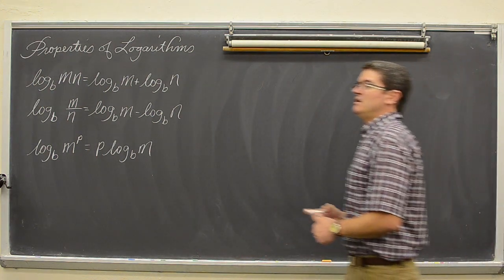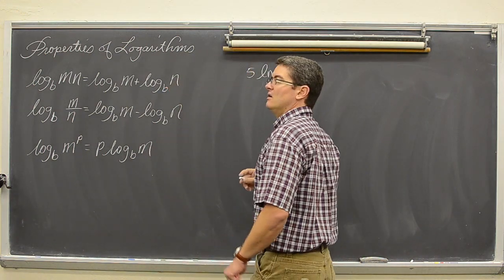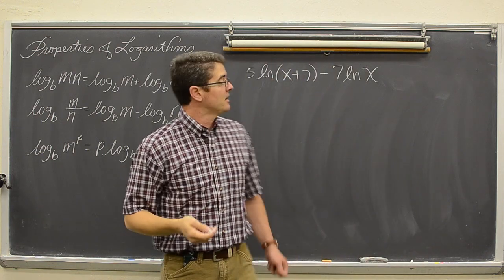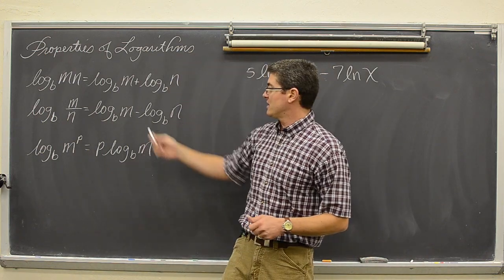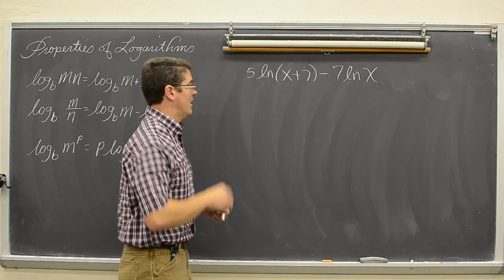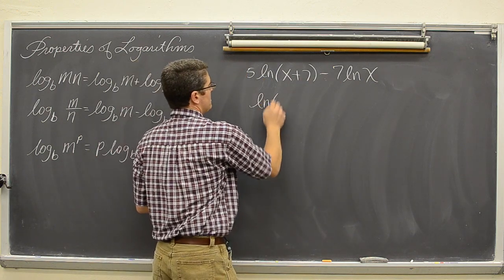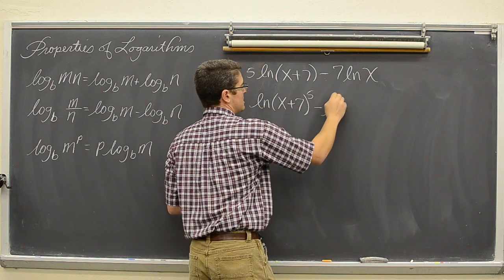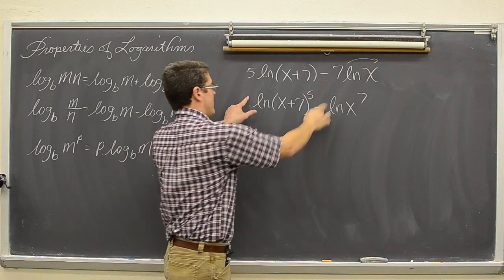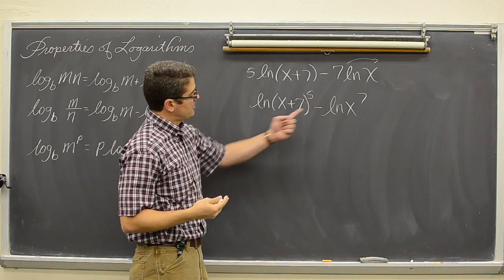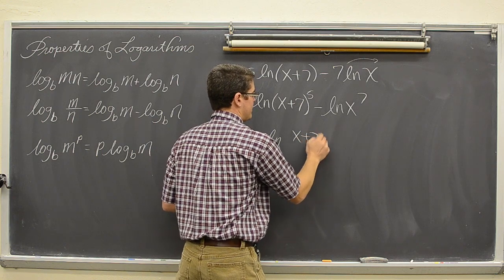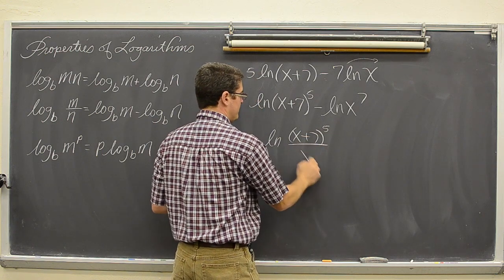Let's take a look at five natural log of x plus seven minus seven times the natural log of x. This time it is subtraction and not addition, so we are not going to set up a multiplication — we are going to set up a quotient or division. But like the last problem, we have leading coefficients that are not one, so those powers come up. We get natural log of x plus seven to the fifth power minus natural log of x to the seventh power. Now that we have leading coefficients of one, we can condense those two logarithms and get natural log of x plus seven to the fifth power divided by x to the seventh.